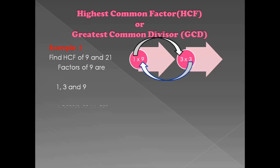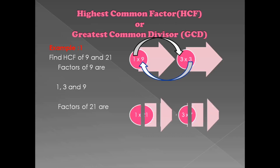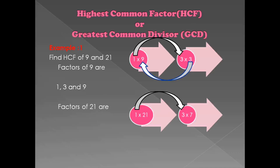Now find the factors of 21. We get 1 × 21, and 3 × 7 = 21. Since 7 × 3 is a repeat, we don't need to write it again. So the factors of 21 are 1, 3, 7, and 21.